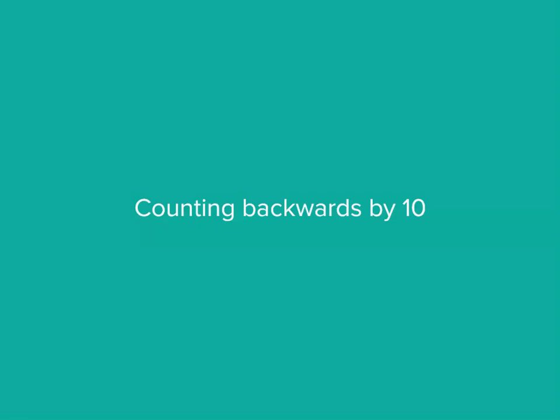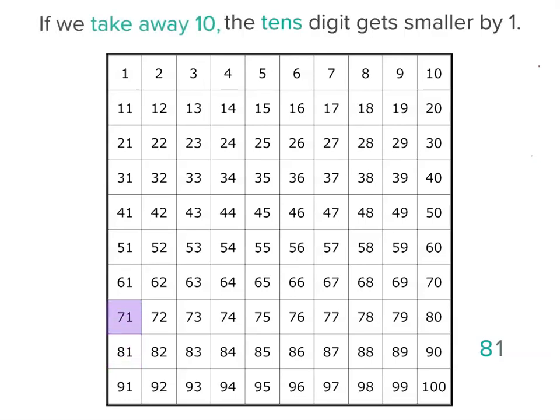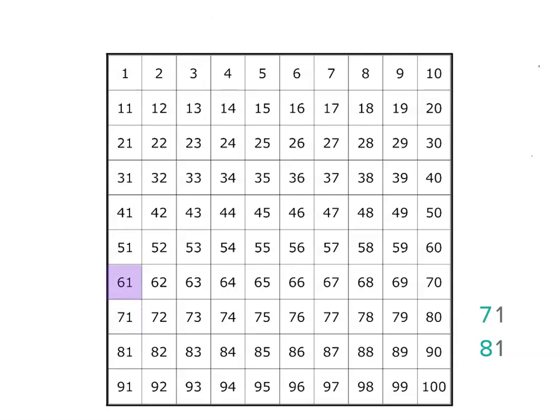But we can do it going backwards as well. So let's take a look. Let's start at eighty-one. Eighty-one has eight tens and one unit. If we count backwards by ten, we go up this time. So this time we have one less in the tens place. We have seven tens and one unit. If we go back by ten, we've only got six tens and one unit.